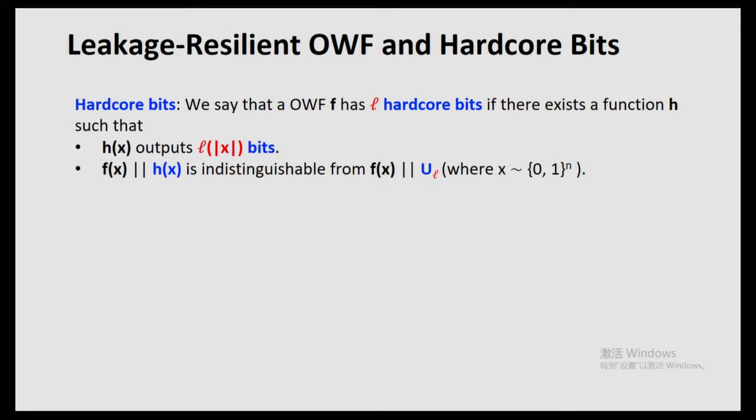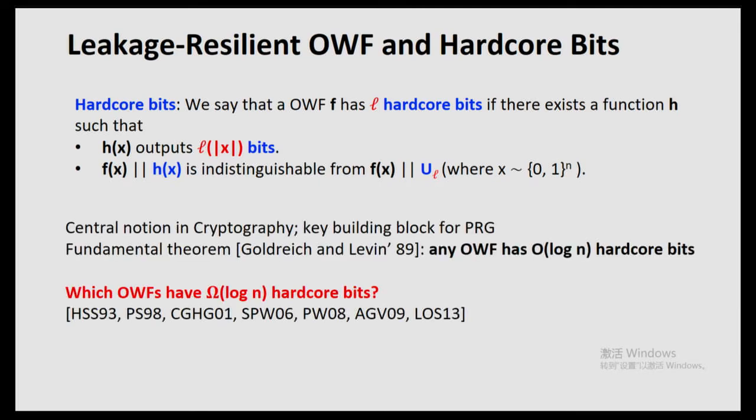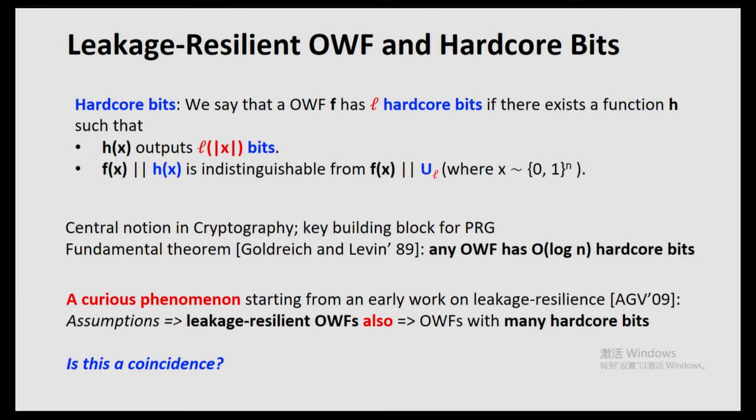Hard-core bits are a central notion in cryptography and a key building block for PRGs — if you concatenate a one-way permutation with its hard-core bits, you get a PRG. The fundamental theorem in cryptography is the Goldreich-Levin theorem, which says any one-way function has log-n hard-core bits. The question is: which one-way functions have super-logarithmically many hard-core bits? We noticed a curious phenomenon starting from the early work on leakage resilience by Akavia, Goldwasser, and Vaikuntanathan — assumptions that admit leakage-resilient one-way functions also admit one-way functions with many hard-core bits.